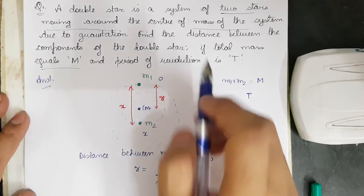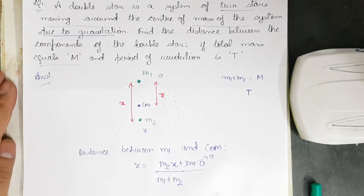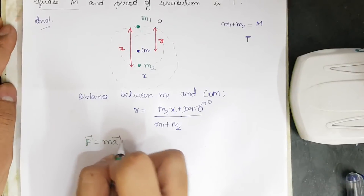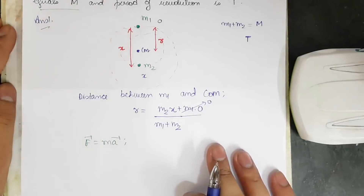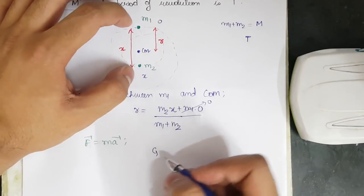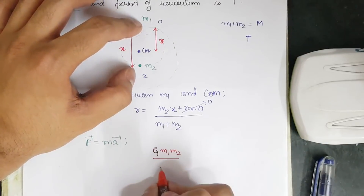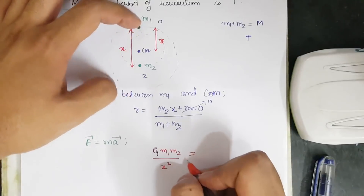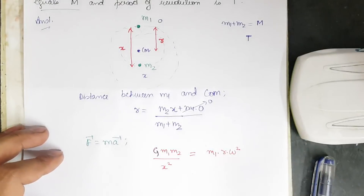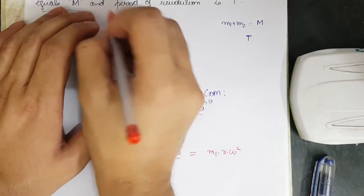The system has only gravitational force — they are attracted to each other only by gravitation. Applying Newton's second law, F = ma: the gravitational force between m1 and m2 is G·m1·m2 / x², and this provides the centripetal force m1·r·ω² for mass m1 rotating around the center of mass at radius r with angular velocity ω.